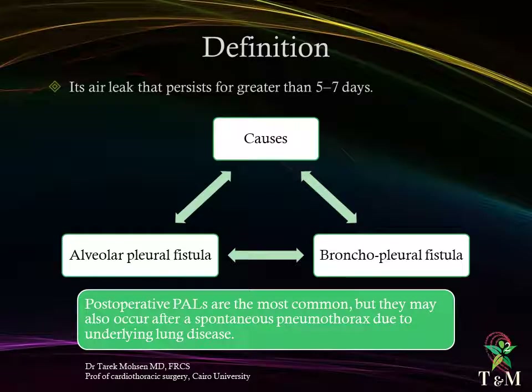Definition: A persistent air leak is a leak that persists for greater than 5 to 7 days, caused either by an alveolar pleural or bronchopleural fistula. By far, postoperative persistent air leaks are the most common, but they may also occur after spontaneous pneumothorax due to underlying lung disease.